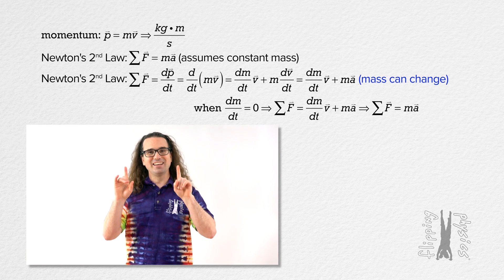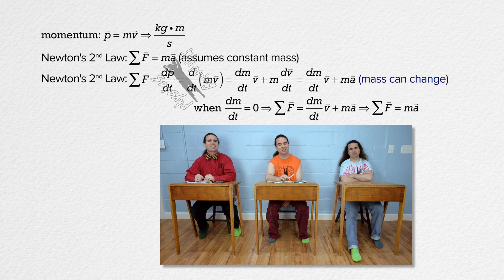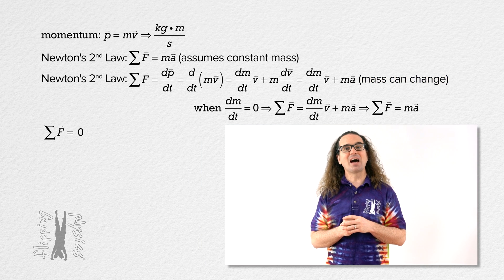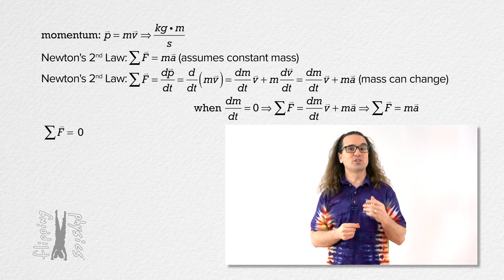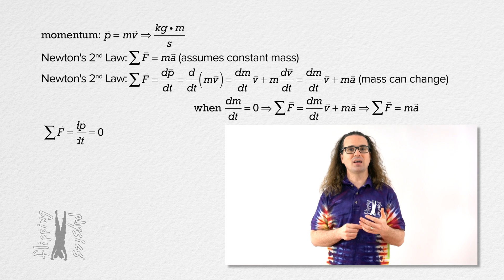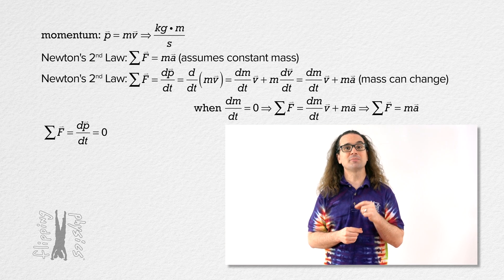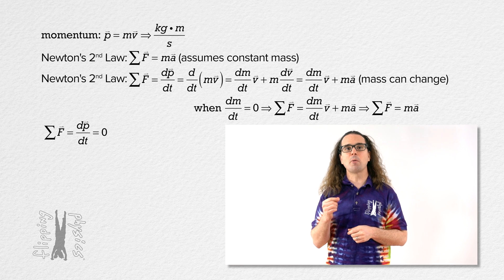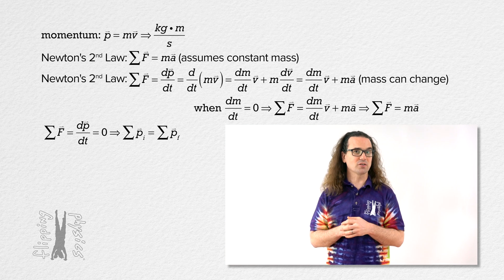But first, when the net force acting on a system equals zero, the derivative of momentum with respect to time equals zero. Therefore, the momentum of the system is not changing. Therefore, the momentum of the system is conserved.